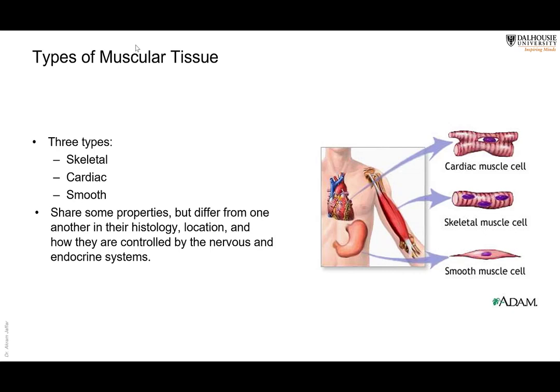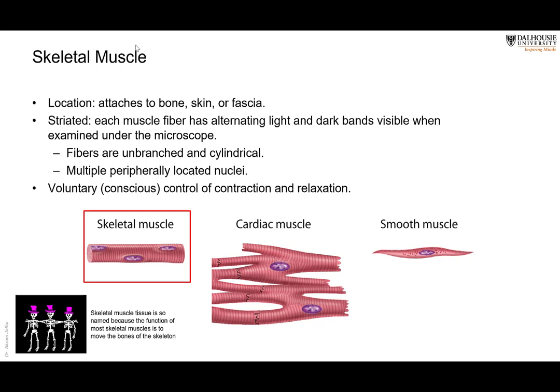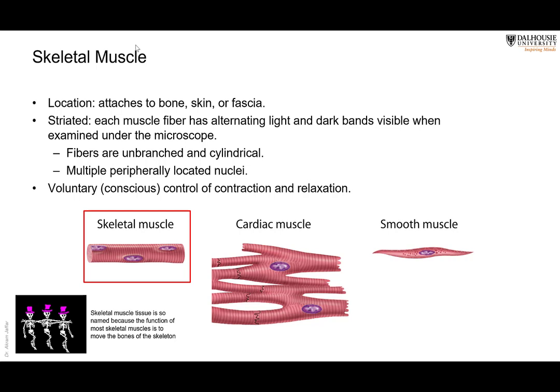We'll start with the skeletal muscle. As the name indicates, they are attached to the skeleton — either to the bone or to fascia. Some of them, as we will see next time, are attached to the skin, like in the face, and they produce facial expression. They are striated. Histologically, if you look at them under the microscope, there are alternating dark and light bands, and we will see in a moment what causes these striations.